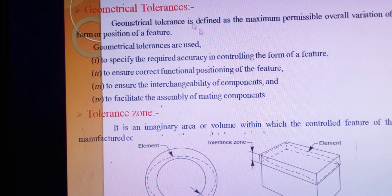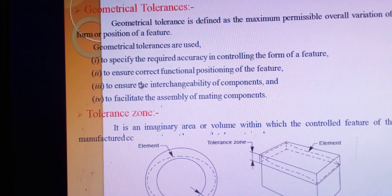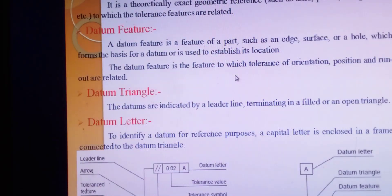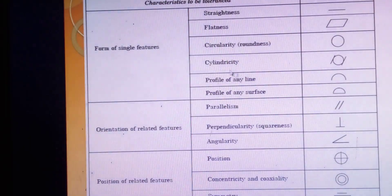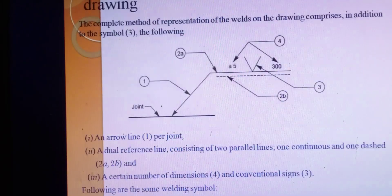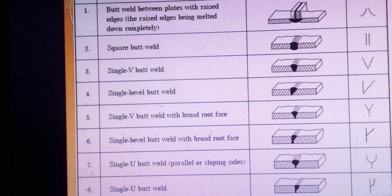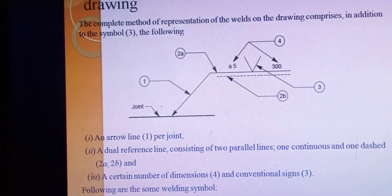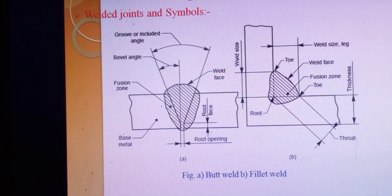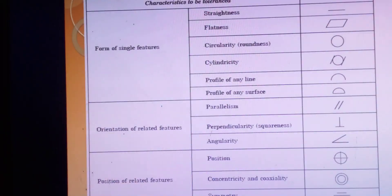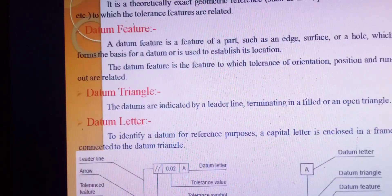The next topic is geometrical tolerance, including welding symbols. We will cover these in the next class lecture. Thank you.